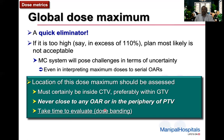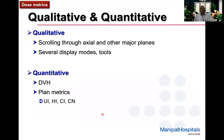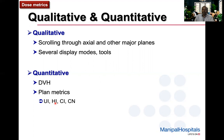Take time to evaluate the global dose maximum, perhaps using different tools like dose banding to find where it is located. Dose metrics has two aspects: qualitative and quantitative. Qualitatively, you scroll through axial and other major planes and use different display modes to see the dose distribution. Quantitatively, you use tools like dose volume histogram and plan metrics such as uniformity index, heterogeneity index, conformity index, and conformity number.